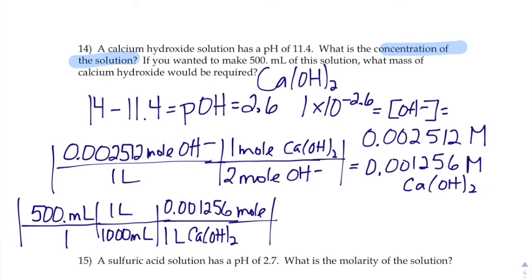And then we're really close. If we're at moles of calcium hydroxide, it wants grams of calcium hydroxide. So we just need the molar mass of that calcium hydroxide to switch it from moles to grams. So if you add up a calcium, two oxygens, two hydrogens, that's 74.1.